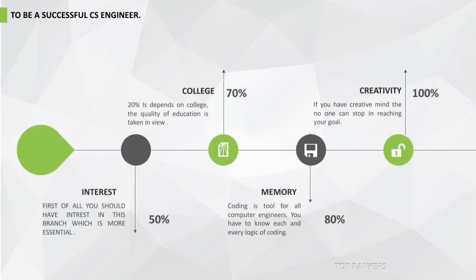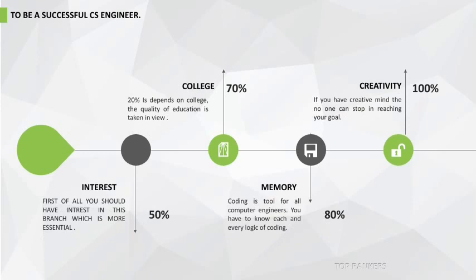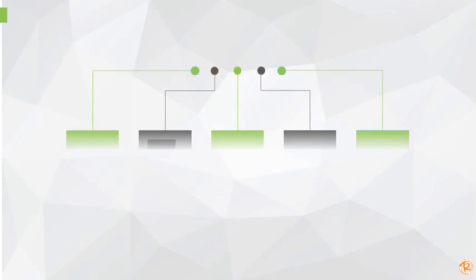To be a successful CS engineer, first of all you should have interest — 50% of your success depends on your interest, and 20% depends on your college, which should be a great and very teachable one. About 10% of your success depends on your memory, and finally, having a creative mind plays a major role in your success.